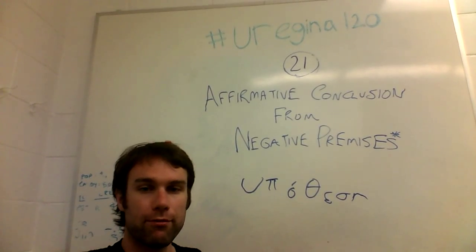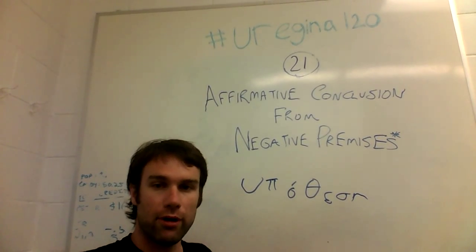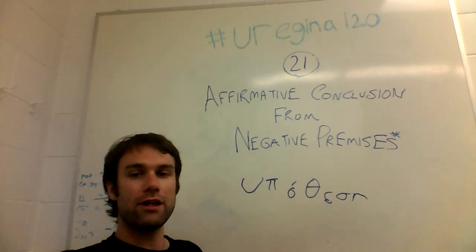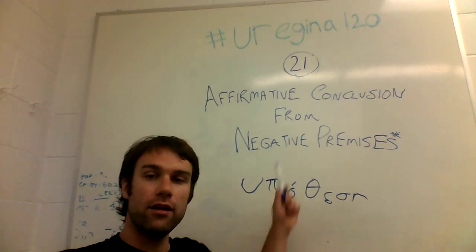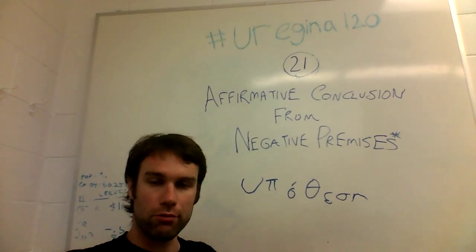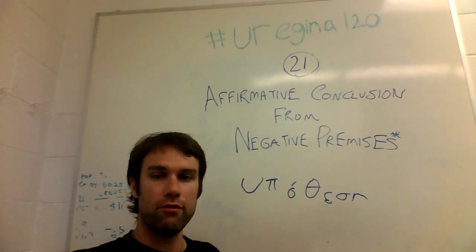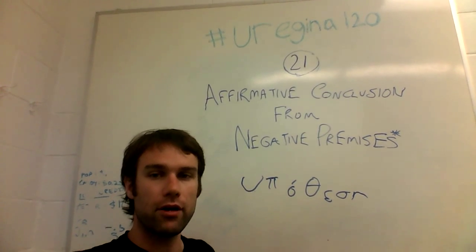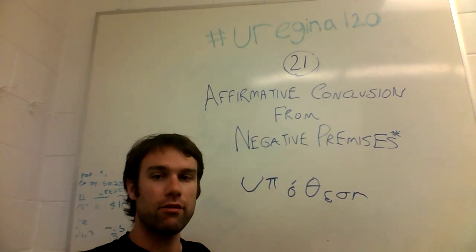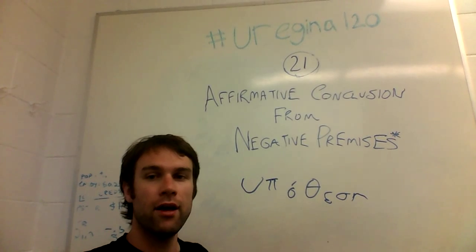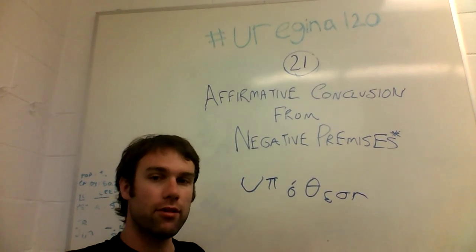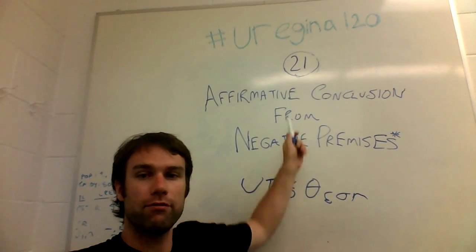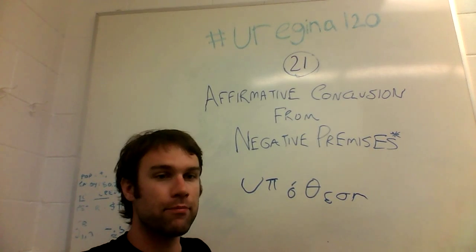You start with the first premise, which is given to you, write out the second premise which is assumed or implicit, and then apply your rules — the list of valid argument forms you've built up — and in particular, look for this fallacy among others: the affirmative conclusion from negative premises.